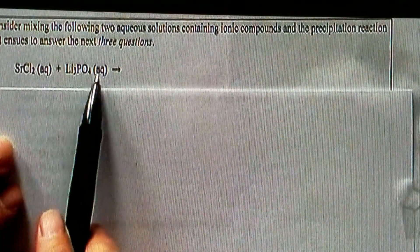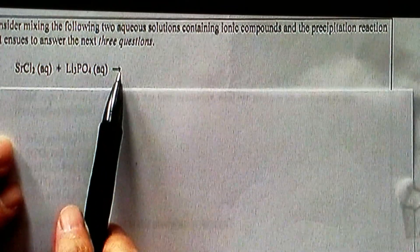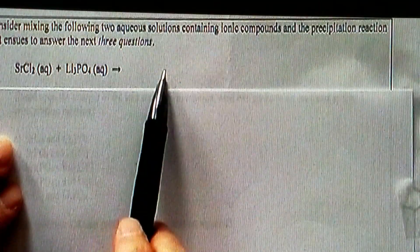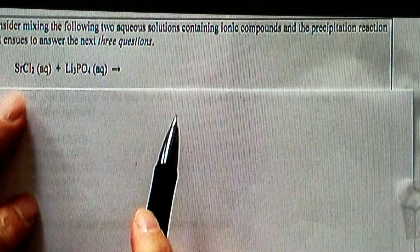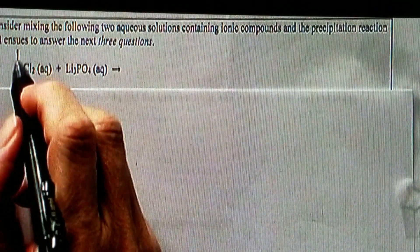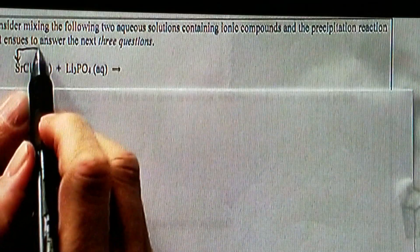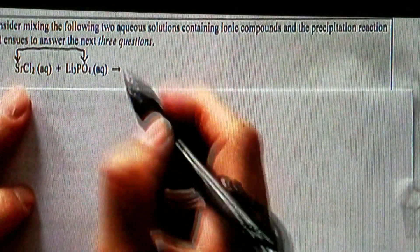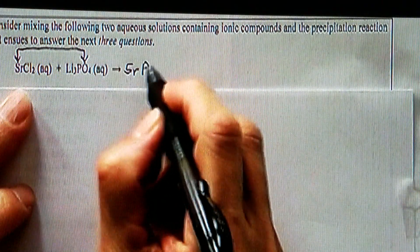We have two aqueous solutions. We are going to first determine what the products are. In order to do that, you have to pair the cation of the first compound with the anion of the second compound, which means we need to put Sr₃(PO₄)₂.